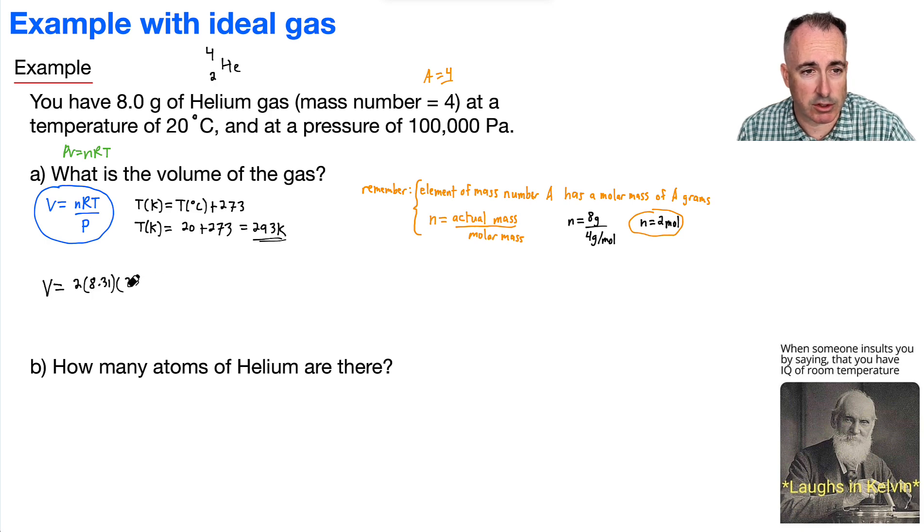Times T, which is 293 Kelvin. All that divided by the pressure, which is 100,000. Well, this I can just do on my calculator.